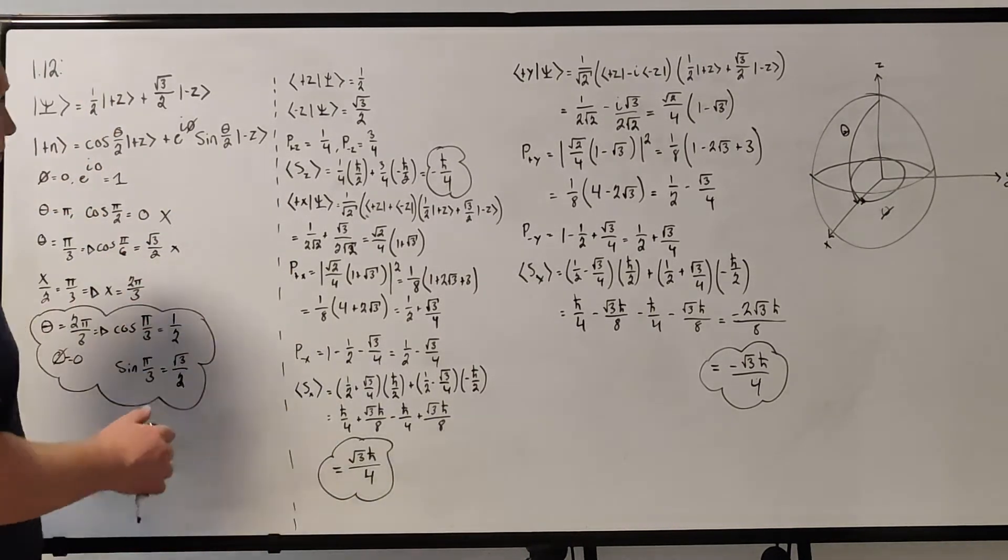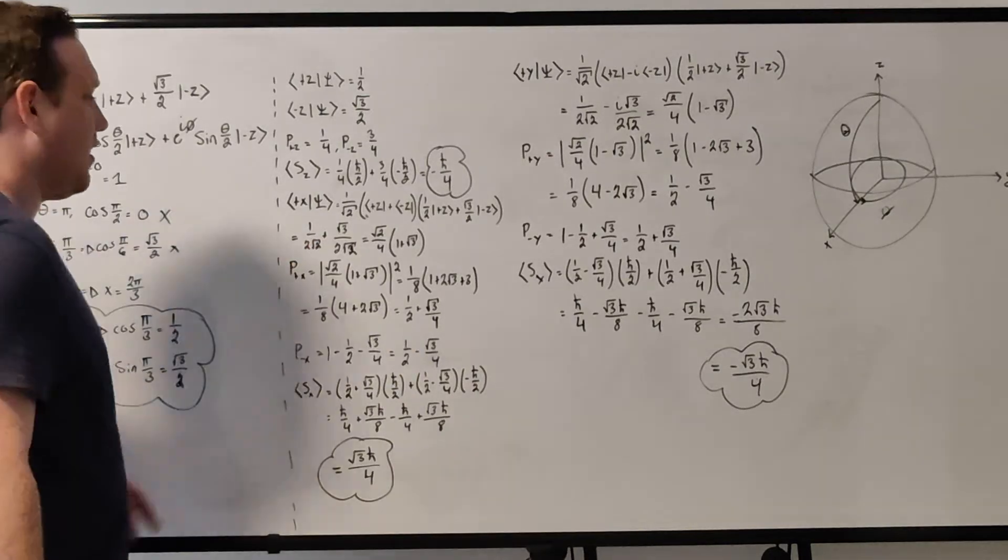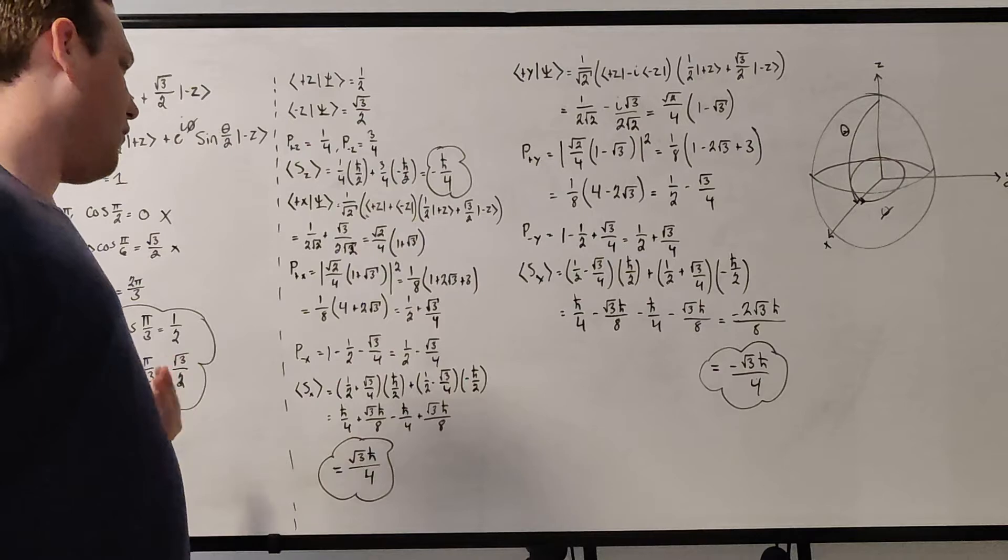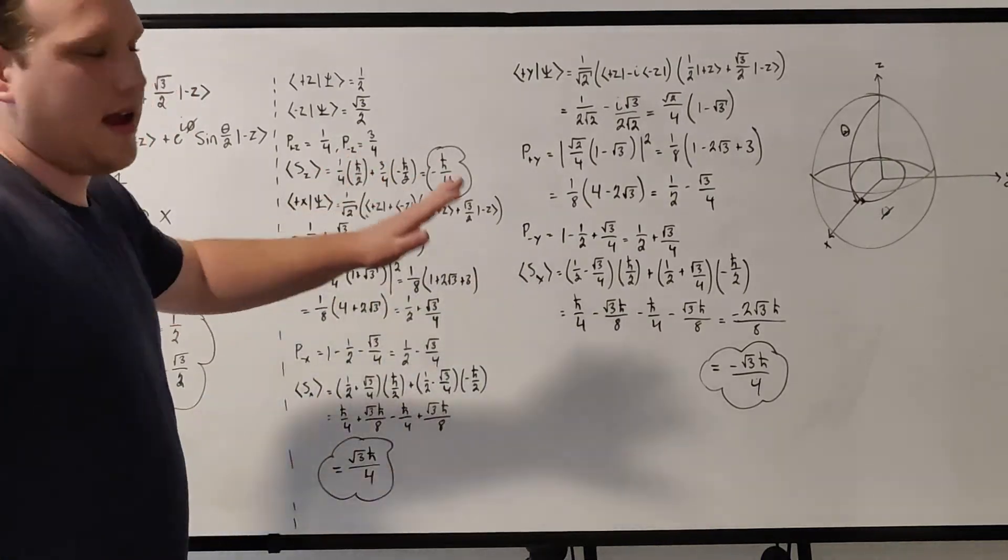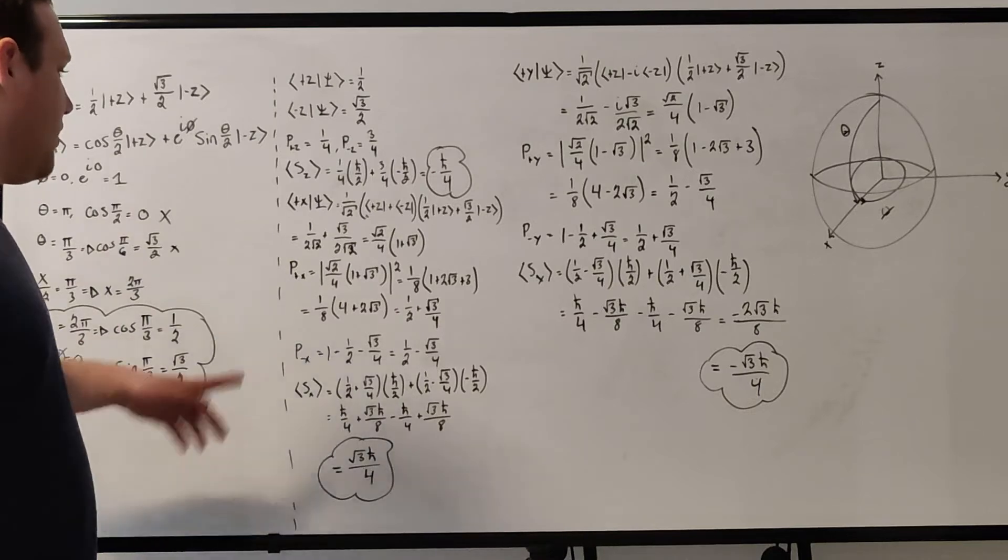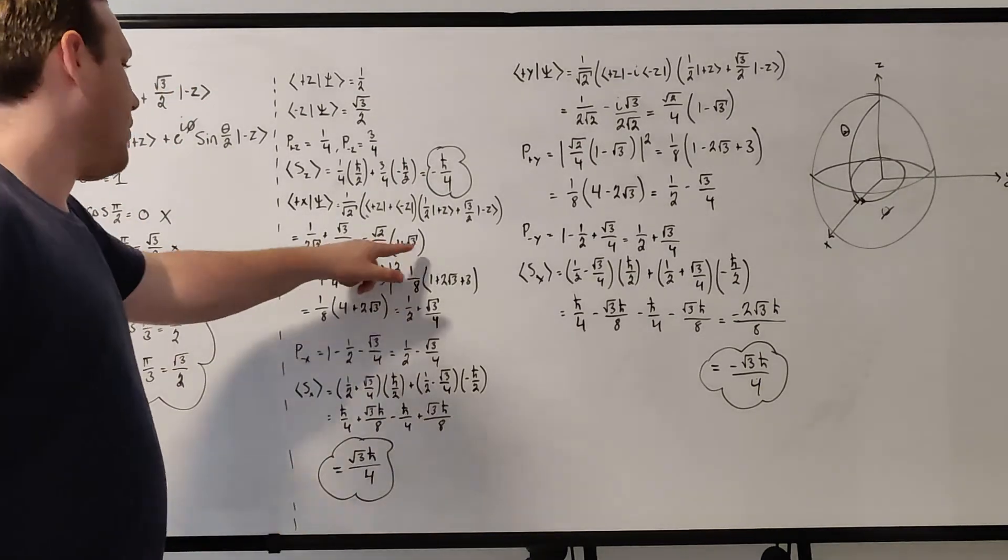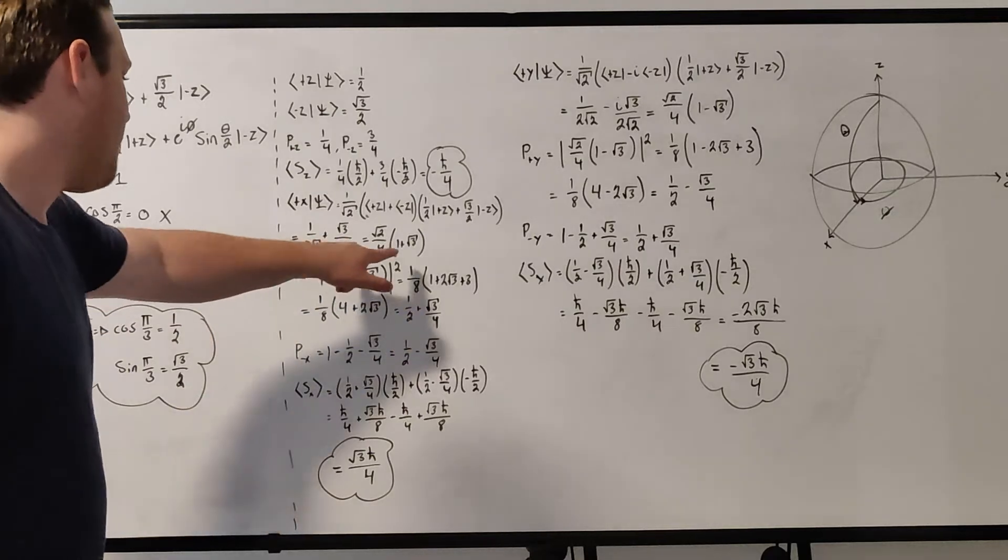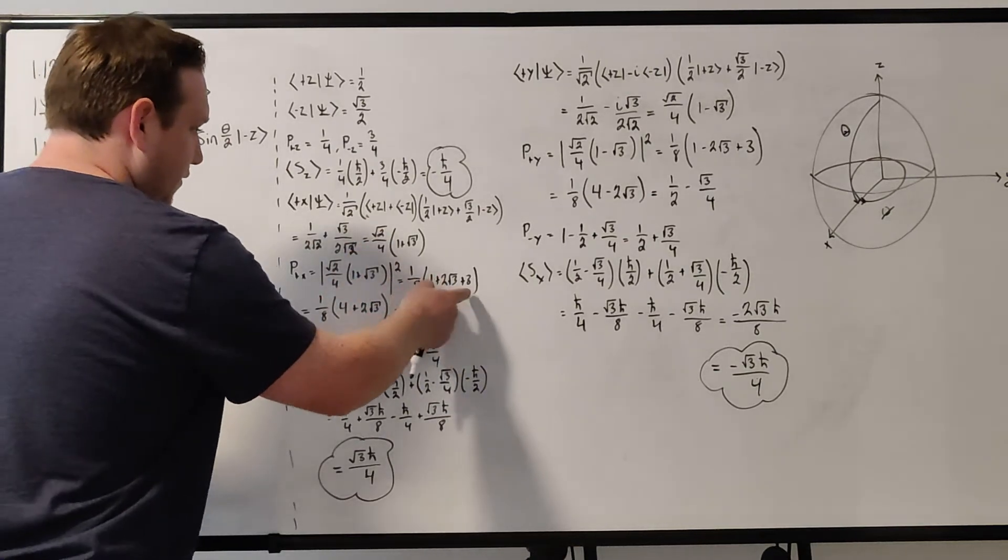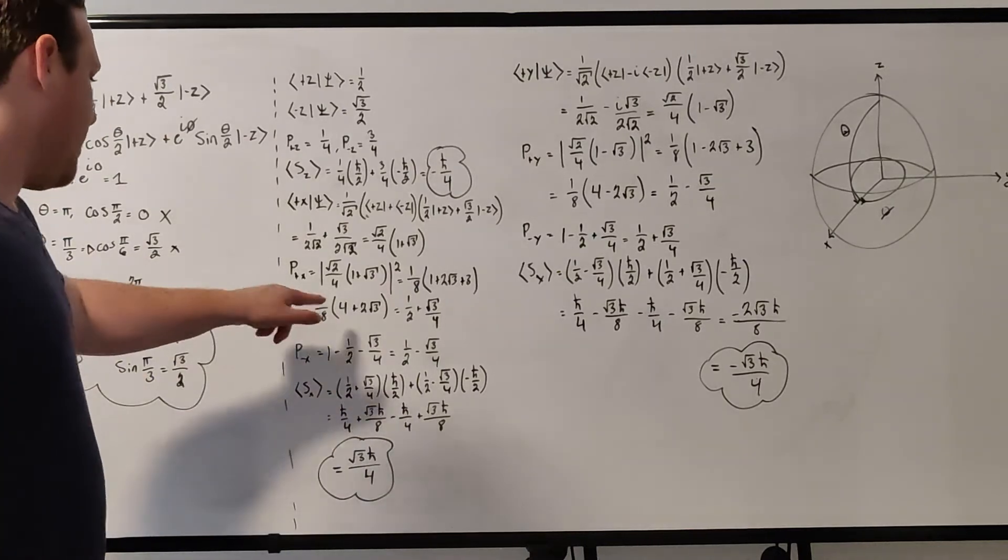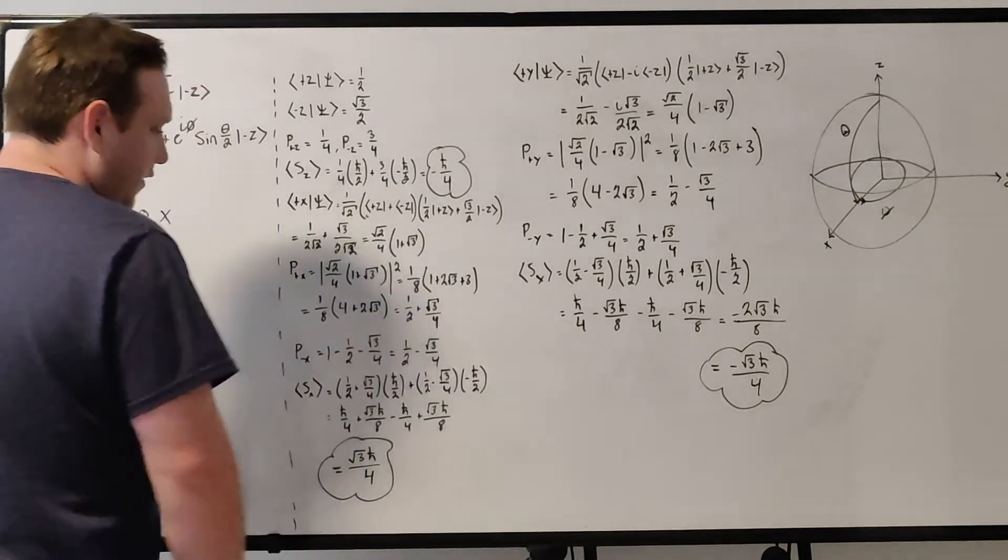For the x-component here, we find the inner product of plus x and psi. So we have 1 over root 2 times plus z plus minus z in the bra form, times the ket form of our vector. This is just simple foiling. You have 1 over 2 root 2 plus root 3 over 2 root 2. Factor out 1 over 2 root 2, and write it as root 2 over 4, and you're left with 1 plus root 3. And then take the magnitude squared of that to get the probability. You get 1 eighth when you square this, and then squaring this, you get 1 plus 2 root 3 plus 3, which becomes 1 eighth times 4 plus 2 root 3. And multiply through, you get 1 half plus root 3 over 4.